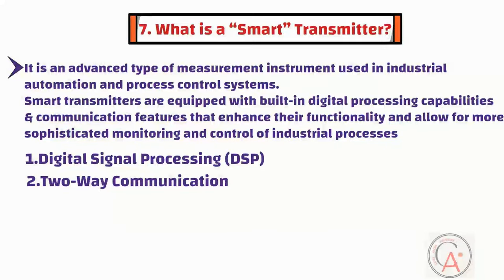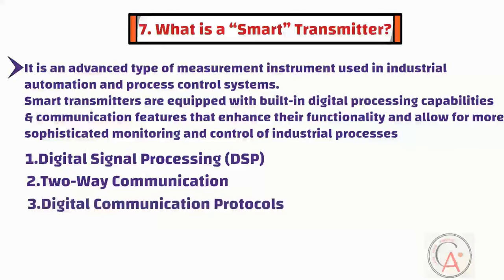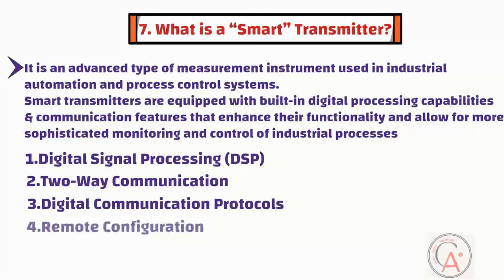The third characteristic is digital communication protocols. Smart transmitters typically support digital communication protocols such as HART (Highway Addressable Remote Transducer) or Foundation Fieldbus. These protocols enable bi-directional communication over the same wiring used for the analog signal. The fourth characteristic is remote configuration. Operators and technicians can remotely configure and calibrate smart transmitters using digital communication protocols, eliminating the need for manual adjustments in the field, saving time and reducing the risk of errors.